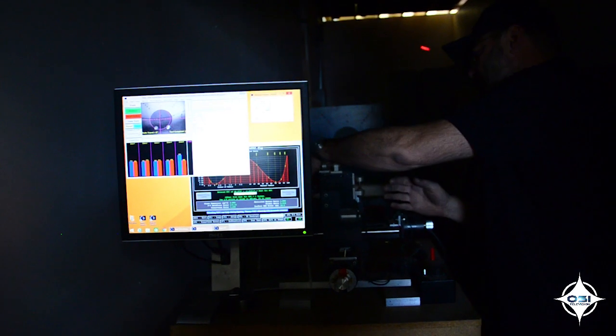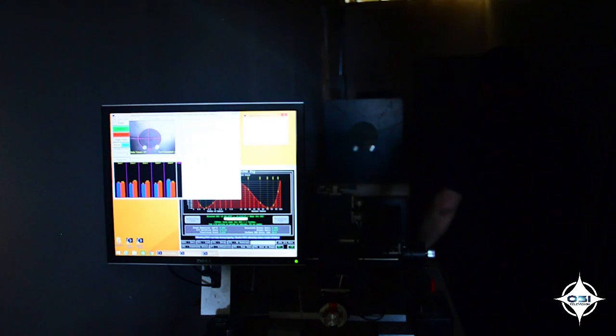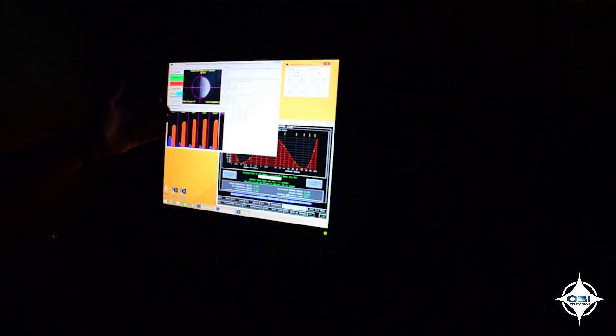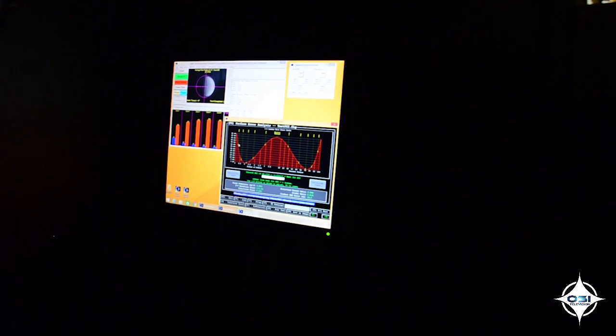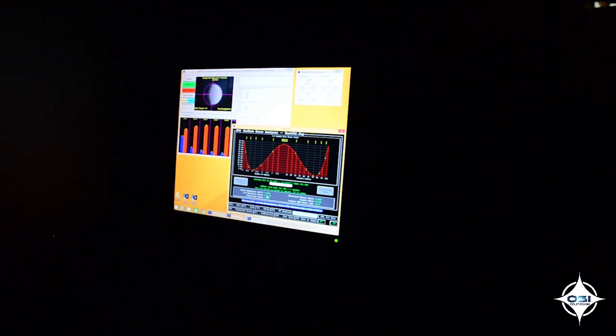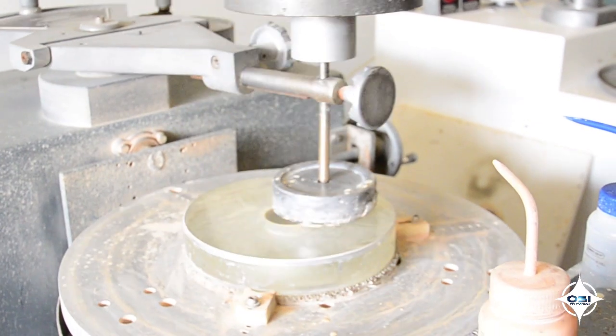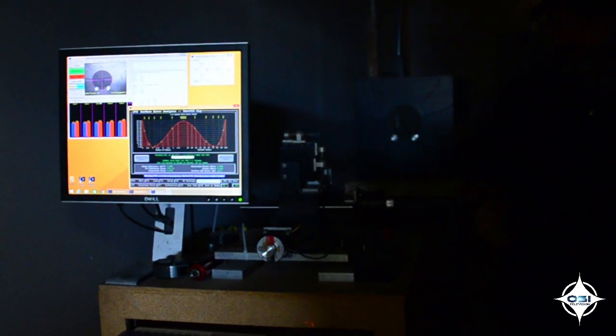Here we are viewing one of our production mirrors under optical test through a classic test that we've computerized. It analyzes the surface and then gives us a report of what the error profile is. So you can see that this is currently a quarter-wave mirror. So we would take this data, go back out to the polishers, continue to adjust the surface of the mirror, come back here and test and iterate until it reaches the quality level we want.